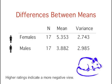We'll take as an example the data from the Animal Research case study. In this experiment, students rated on a 7-point scale whether they thought animal research is wrong. The sample sizes, means, and variances are shown separately for males and females.